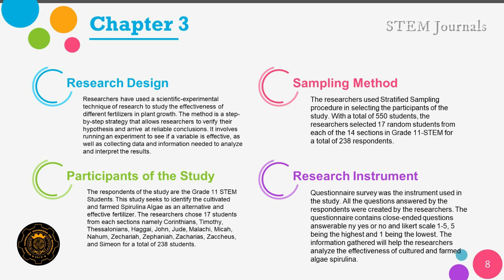The sampling method used in selecting the participants of the study is stratified sampling, with a total population of 550 students. The researchers selected 17 random students from each of the 14 sections in Grade 11 STEM for a total of 238 respondents. The study seeks to identify the cultivation and effectiveness of spirulina algae as an alternative and effective fertilizer in developing nutrient-rich vegetation. For the research instrument, the researchers used a questionnaire survey sent via Google Forms to the chosen respondents.